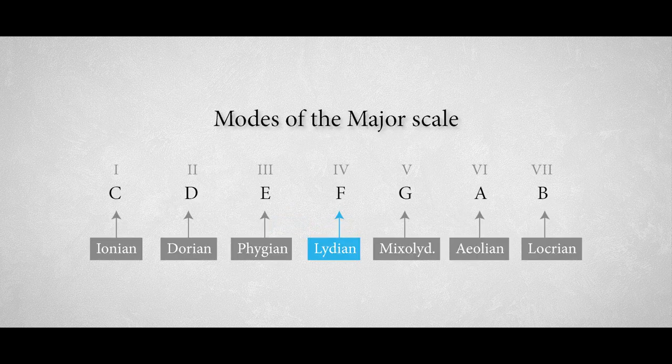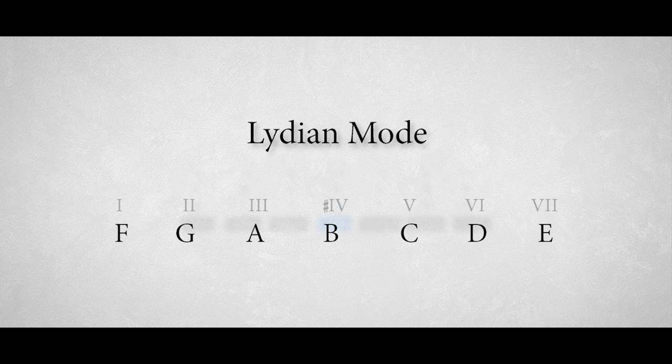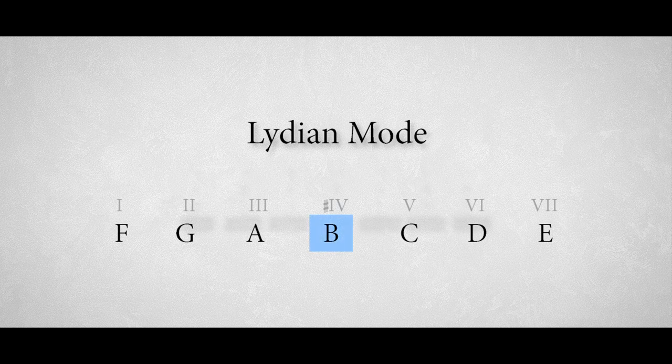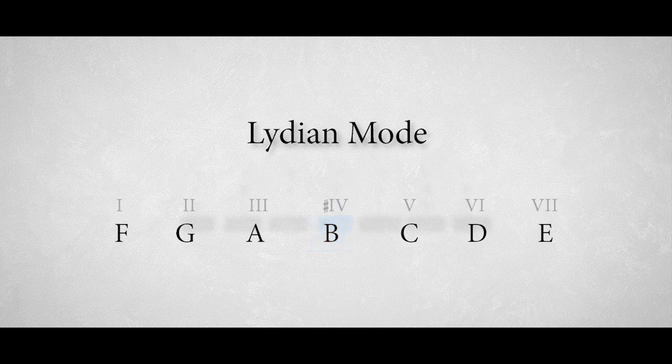The Lydian scale is the uplifting and sometimes dreamy sounding fourth mode of the major scale. It's the brightest scale of all the modes, caused by the raised fourth degree in the scale. It's often used for film scores and in instrumental rock music.